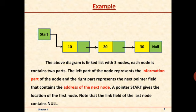Let us consider one example. In this diagram, we have three nodes. The first part of the node represents the information part, and the second part — the right part — represents the pointer field, which holds the address of the next node. The start pointer gives the location of the first node. At the end, the pointer contains null, meaning no nodes are present after the last one.